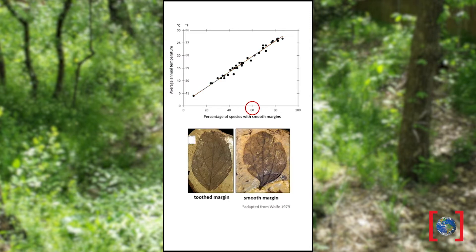Which brings us to the fossil record. If we have a fossil flora where, say, 60 percent of the species have smooth margins, we can draw a line straight up from that point on the x-axis until we reach the diagonal line, and then draw a line over to the y-axis to get the temperature in both Celsius and Fahrenheit. In this case, 60 percent corresponds to 67 degrees Fahrenheit. Or for an even more precise way, you can use the equation that describes this line to calculate the temperature. This method has been used on many fossil flora through geologic time and has been a great source of information about earth temperature and environments in deep time.